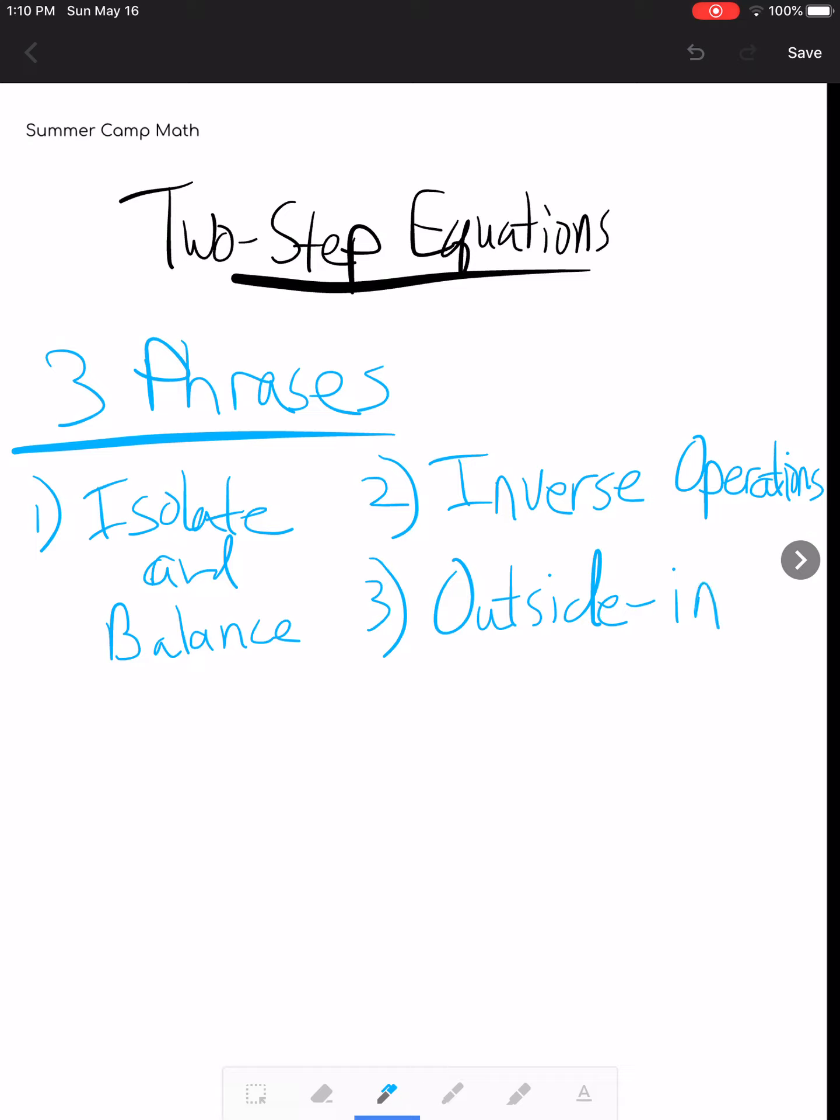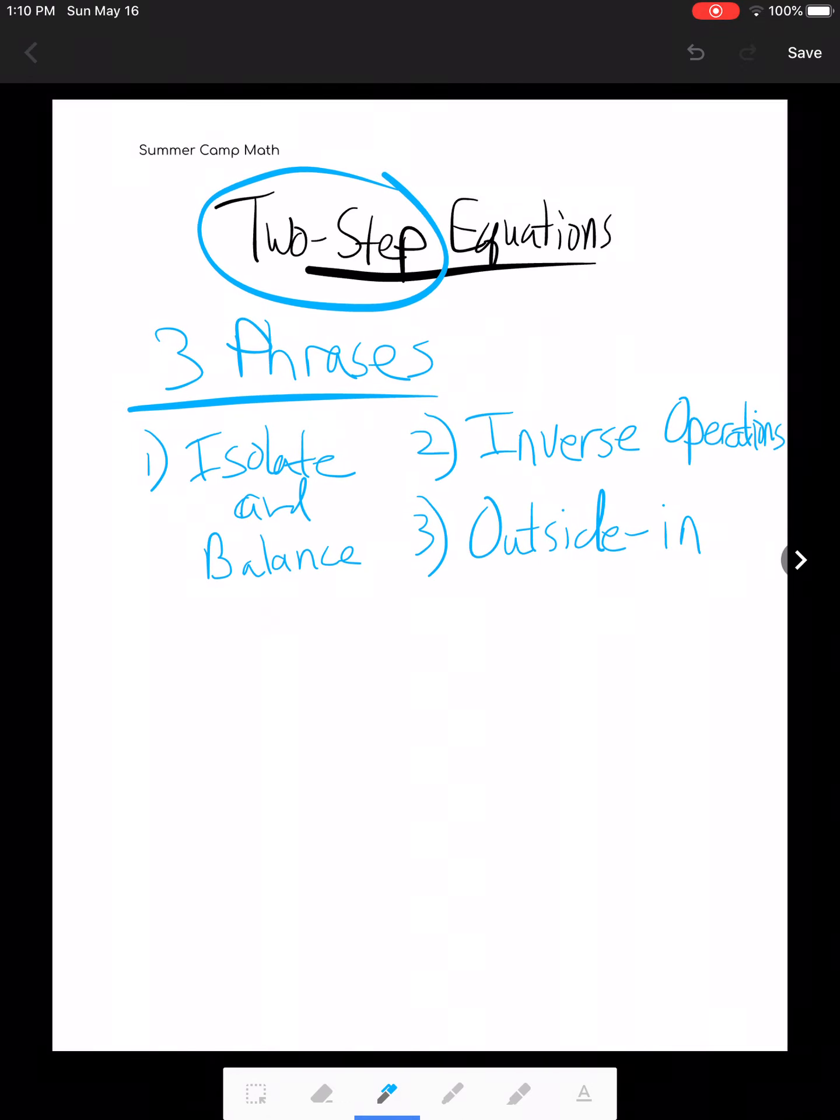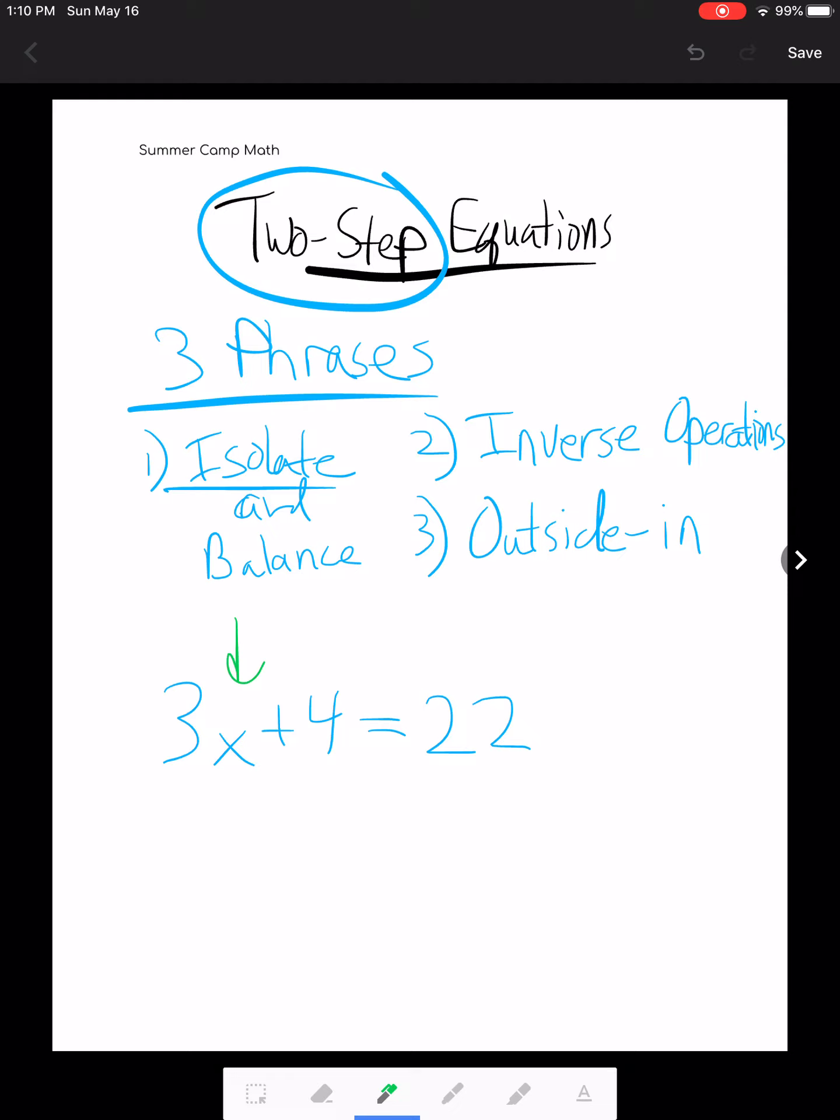Now, what's kind of cool about this is that we essentially have three two-word phrases for our two-step equations. When I'm saying isolate and balance, I mean we want to isolate our variable by balancing out the equation. So let's take a look at a quick example here. Let's say we have 3x plus 4 is equal to 22. What I want to do is get this variable all by itself. So when I say isolate, that's what I mean. We're going to isolate the variable.